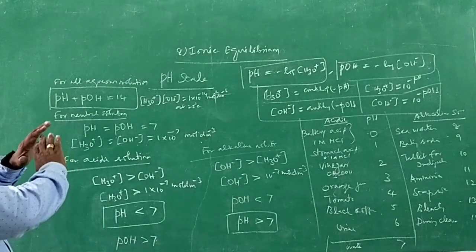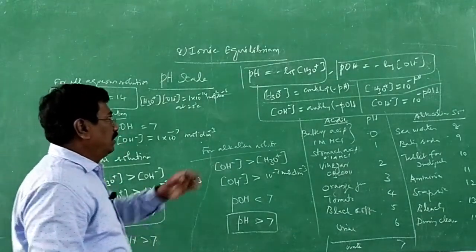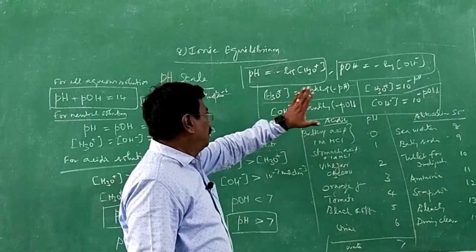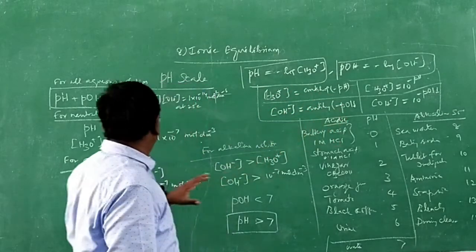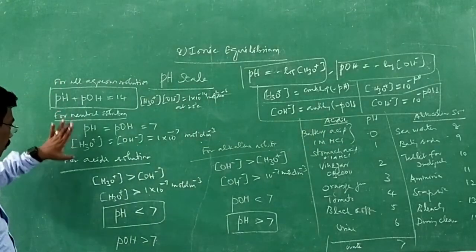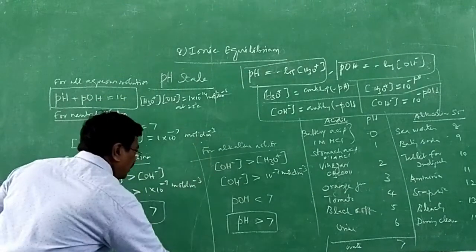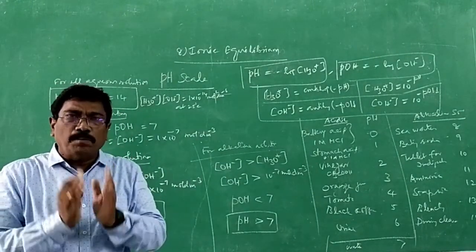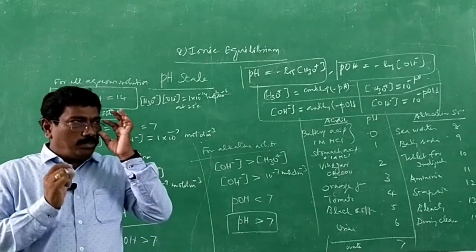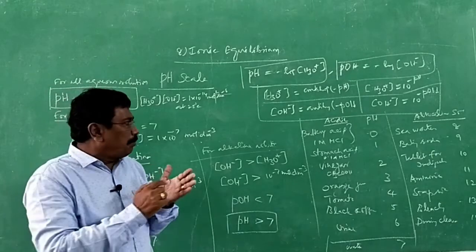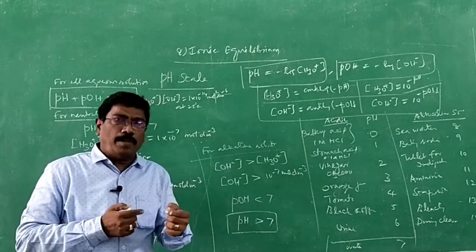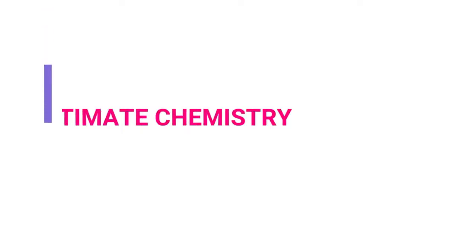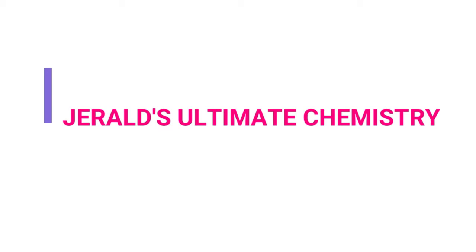So I have given a brief idea about pH — how to calculate pH, hydronium ion concentration, pOH, and hydroxide ion concentration. pH of neutral solution is 7, acidic solution pH < 7, alkaline solution pH > 7. In the next class, we will solve problems based on pH, including interesting cases like a 10⁻⁷ molar acid. Thank you.